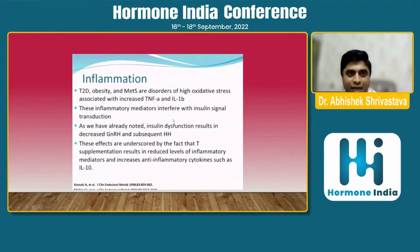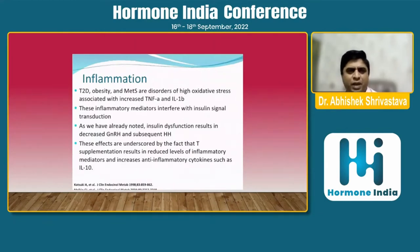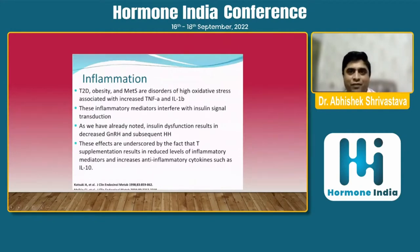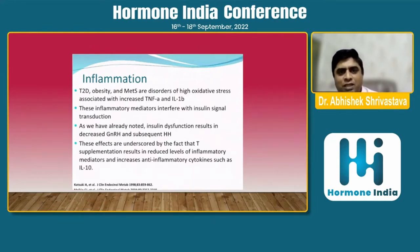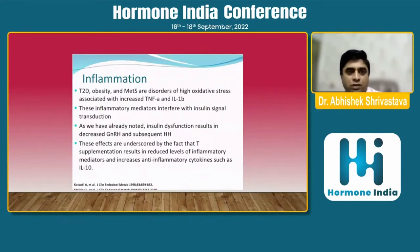Inflammation and oxidative stress also lead to low testosterone. High levels of inflammation are seen in type 2 diabetic patients, obesity, and patients with metabolic syndrome — conditions with high oxidative stress. These inflammatory mediators interfere with insulin signaling transduction, and insulin dysfunction results in decreased GnRH levels and subsequently hypogonadism. Notably, testosterone supplementation results in reduced levels of inflammatory mediators, which we will discuss in later slides.